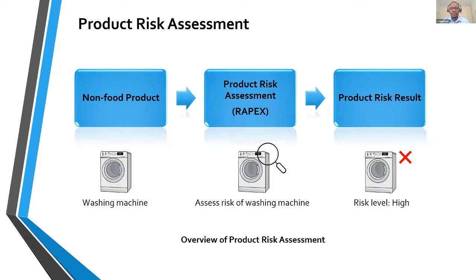As consumers we expect that the products we use are acceptably safe. To ensure our safety, regulators perform product risk assessment — the overall process of determining whether a product is safe for consumers to use. There are several methods of product risk assessment, including RAPEX, which is a primary method used in the UK and EU. Despite its widespread use, we have identified several limitations of RAPEX, including a limited approach to handling uncertainty and its inability to assess the risk of novel products or products with little or no historical data.